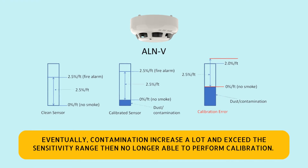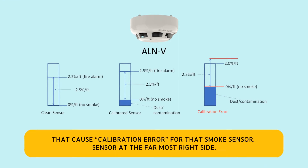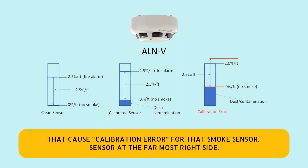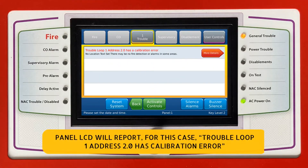Eventually, contamination increases a lot and exceeds the sensitivity range, so the panel is no longer able to perform calibration. That causes a calibration error for that smoke sensor — the sensor at the far right side. The panel LCD will report, for this case: Trouble Loop 1, Address 2.0 has calibration error.